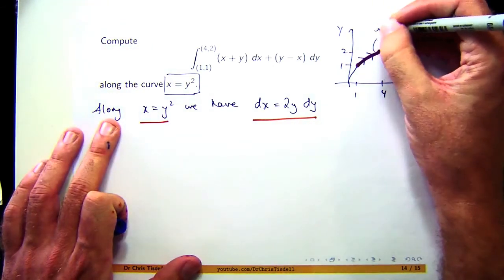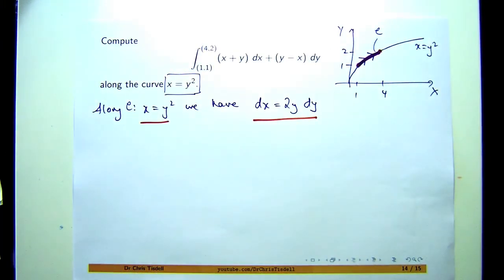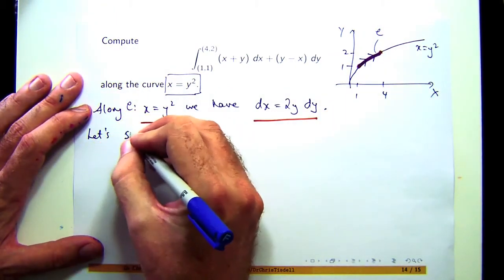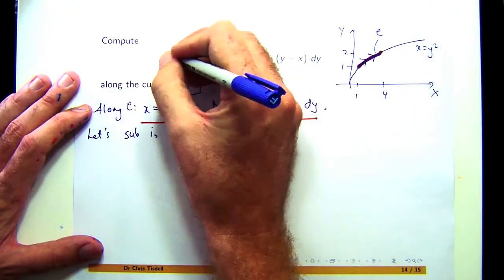So let's just call this curve C. So along C, we have x equals y squared, and we have the differential satisfying this. So let's substitute these relationships into star.